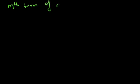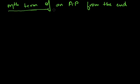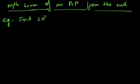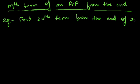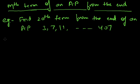Now we move on to finding the mth term of an AP from the end. Previously we found the nth term from the beginning; now we find a term from the end. For example: find the 20th term from the end of the AP 3, 7, 11, ..., 407. There are different ways to solve this; the easiest is to reverse the series.